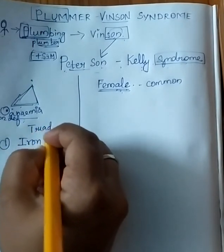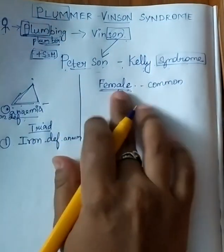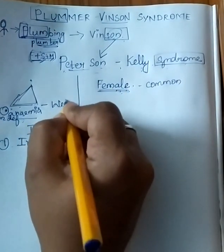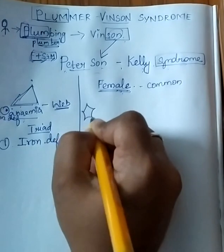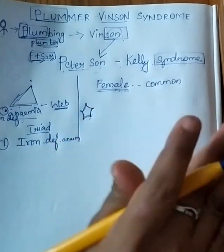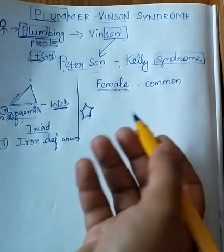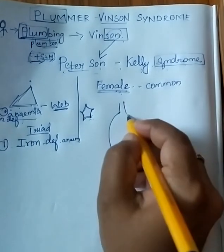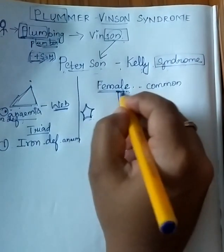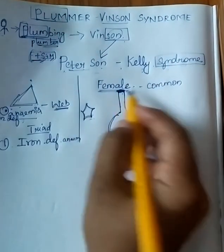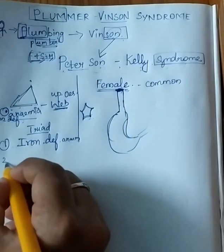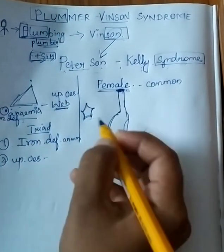The father, son, and mother used to live in a house, and their house was in a web shape — just imagine a spider web. The house name is 'web,' and it is located in the upper esophageal portion. So upper esophageal web is the second triad symptom.